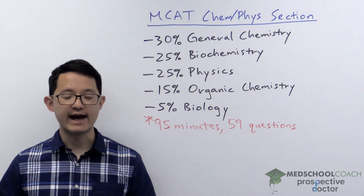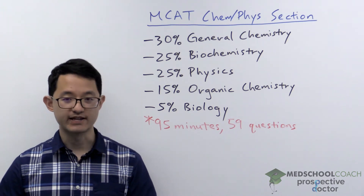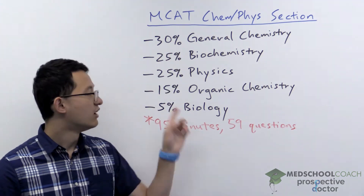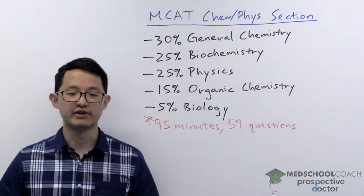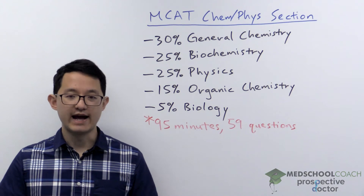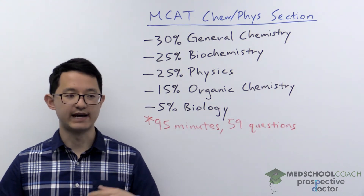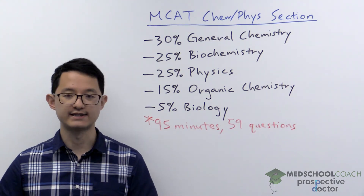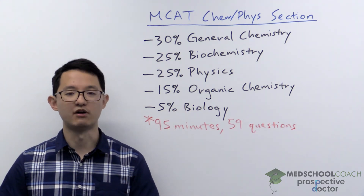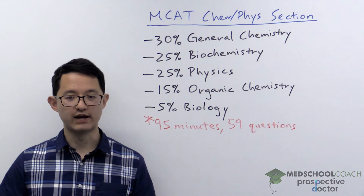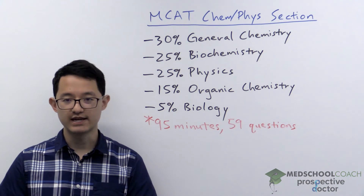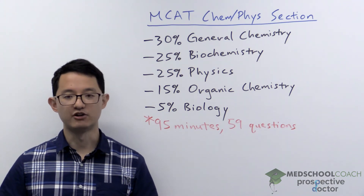A good example is acid-base chemistry. Acid-base chemistry is a general chemistry topic, but it is also covered in organic chemistry and biochemistry. In general chemistry, you learn the basic concepts of acids and bases — what makes an acid a strong or weak acid. In organic chemistry, you look at how the chemical structure of a molecule affects its acidity. And in biochemistry, you look at specific examples, like the amino acids.